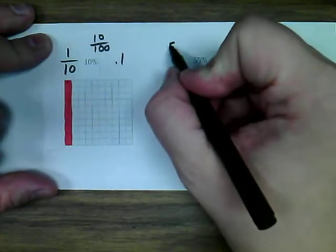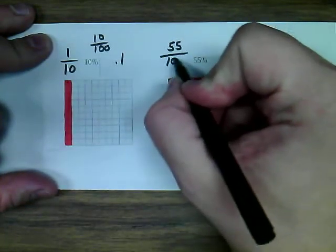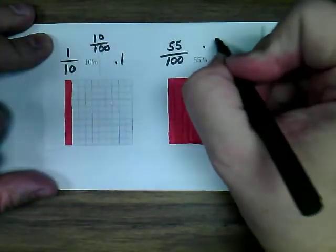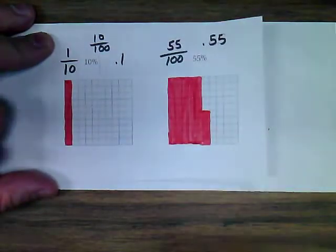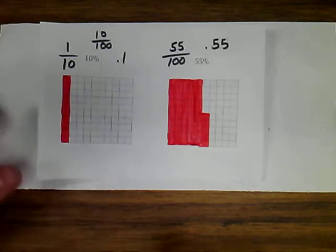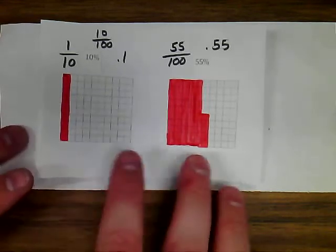And the same thing over here, this would show 55 over 100, it would show .55, and it shows 55%. So it shows the fraction 1 out of 10, the fraction 10 out of 100, the percent 10%,